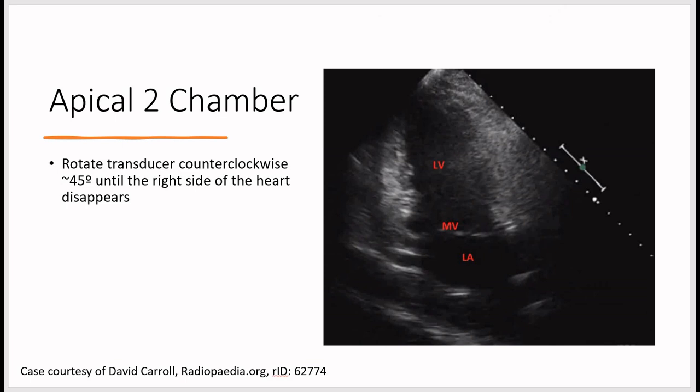The apical two chamber view is obtained directly from the apical four chamber view by rotating the transducer 45 degrees counterclockwise until the right side of the heart disappears, leaving only the left side. Structures visible are the left ventricle, mitral valve, and left atrium.